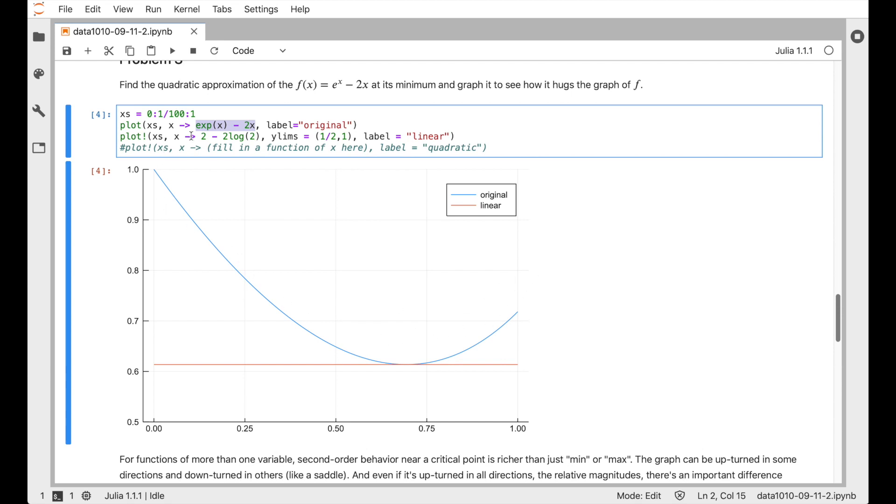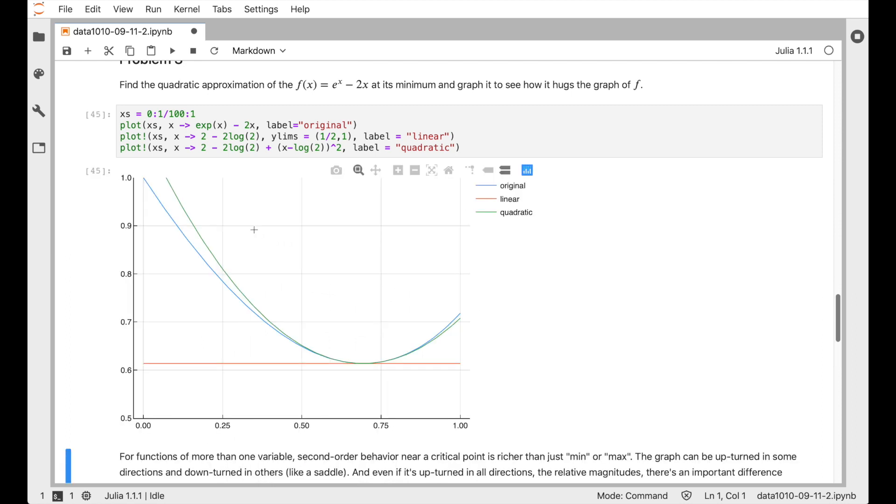And what we want to do is Taylor expand around that point in order to get the behavior of the original blue function, e to the x minus 2x, to get it approximated using a quadratic as well as possible. So the linear approximation is just flat. The gradient, or in other words, the derivative is 0 there, so the line is going to be flat. To get the quadratic term, so we start at the correct value, 2 minus 2 log 2. Then we need to add some quadratic stuff, so it's going to be squaring how far we are from that base point. But then we need to match up. Actually, let's just run this and see what it looks like. So actually that does a decent job. So maybe 1 is the correct value here. If you use an incorrect value, then you'll see that it doesn't match up with the blue curve as well. So we need to figure out what value goes here.